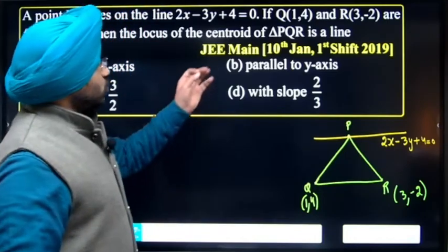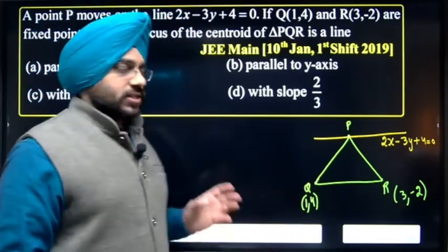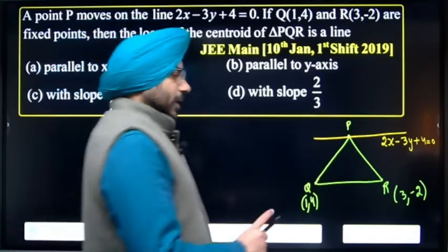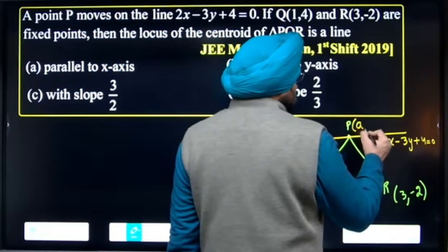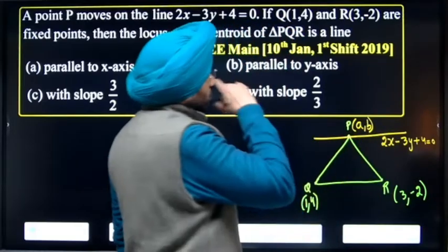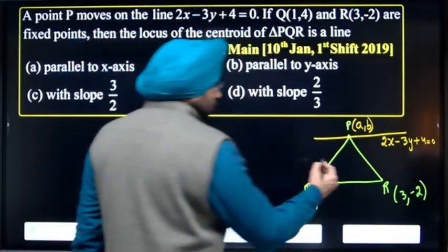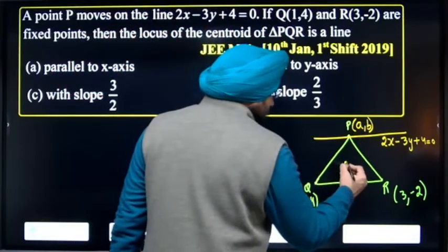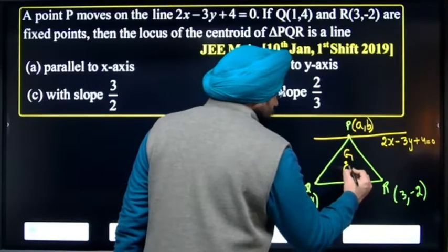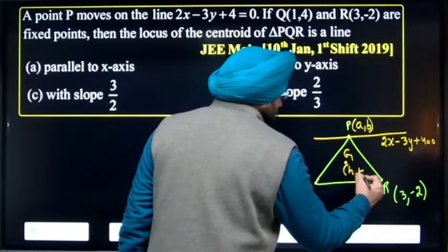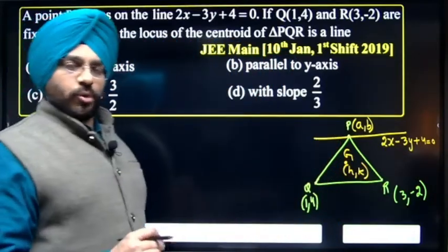We need to find the locus of the centroid of triangle PQR. For the centroid locus, assume the centroid point as (h, k). We need to find the locus in terms of h and k.